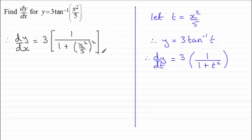And we then need to multiply by dt/dx. And dt/dx will be equal to 2x over 5. So that goes in here then as 2x over 5. So it's just a question now of just tidying this up. And we've got 3 then times the 2x, that's going to be 6x.